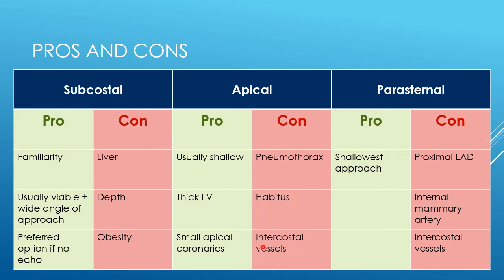For the parasternal procedure, it's a very shallow depth to insert the needle, and you will inevitably transect fluid on your way to the right ventricle. However, there is a risk of damage to the LAD, which courses pretty much under your approach, since you're limited in how lateral you can be. You must be as close to the sternum as possible to avoid the internal mammary artery, and use the cephalad border of the rib to avoid damage to the intercostal vessels.